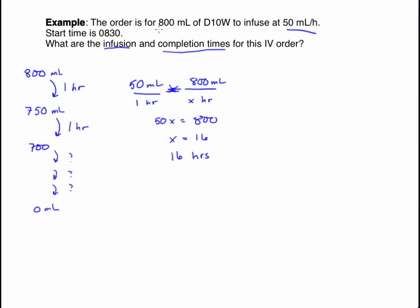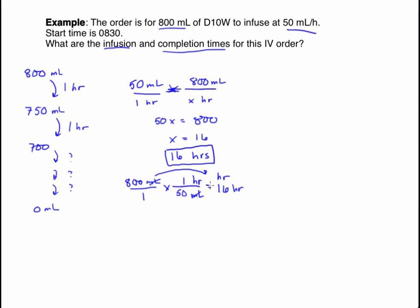Another way is to use dimensional analysis. Start with the volume — 800 milliliters — and convert it into hours. To cancel milliliters, place it in the denominator, and use the known rate of 1 hour per 50 milliliters. Multiplying gives 800 divided by 50, which equals 16 hours. This is a clean problem with no decimal. The infusion time is 16 hours.